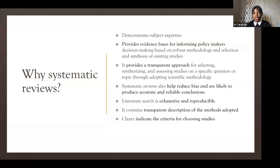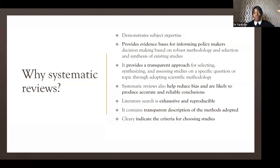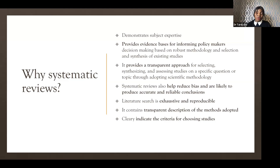You also give reasons why you're not including certain studies. Another reason systematic review is important is because it is exhaustive — you're searching diverse databases. You might be looking at EBSCO, Web of Science, the International Bibliography of the Social Sciences — a whole wide range, not just confined to one database. That allows you to be as exhaustive as possible, going back to reducing the level of bias. You look at gray literature, hand-searching of libraries, and reference lists of published texts, making it very exhaustive in terms of how you source the studies for your final review.